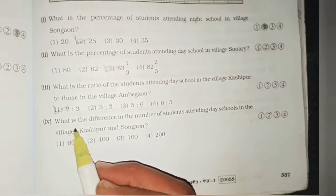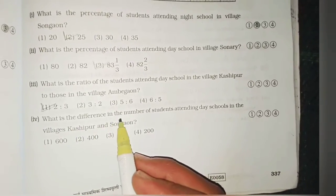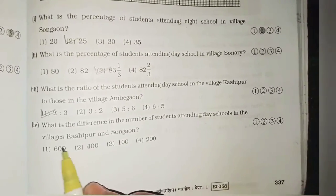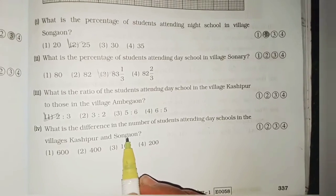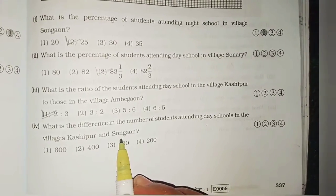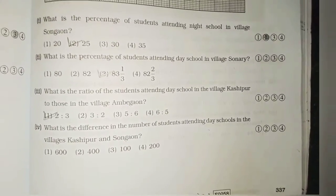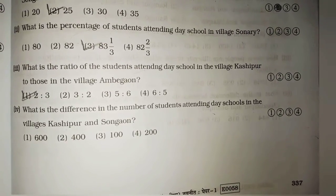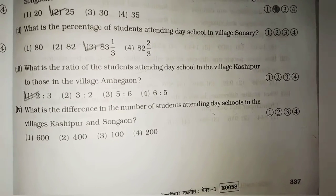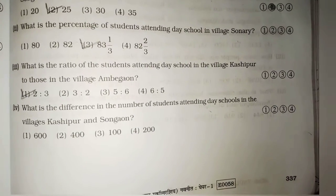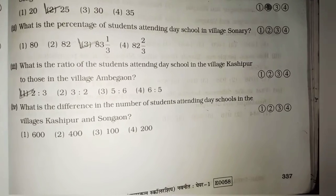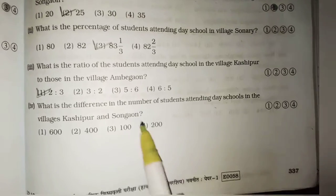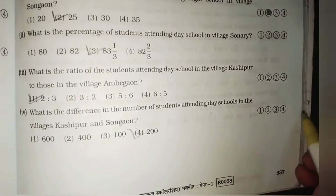Last question. What is the difference in the number of students attending day school in the village Kashipur and Sonegao? Kashipur आणि Sonegao या गावातील सकाळचे शाळामधी शिकणारे विद्यार्थांच्या संख्येतिल फरक किती फरक आहे? Two hundred. Two hundred फरक आहे.